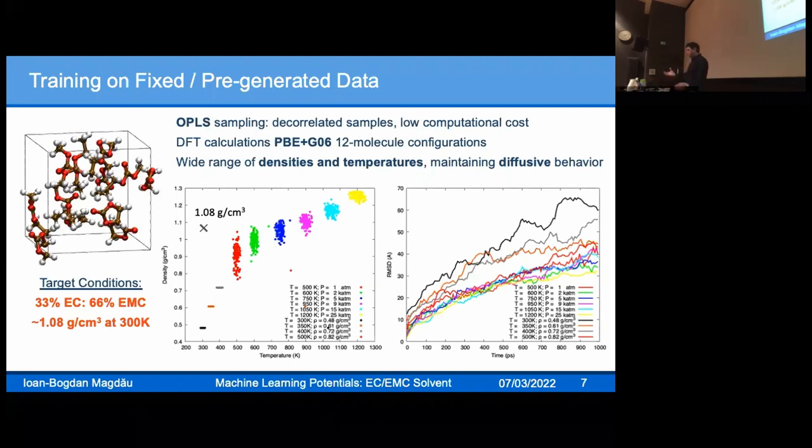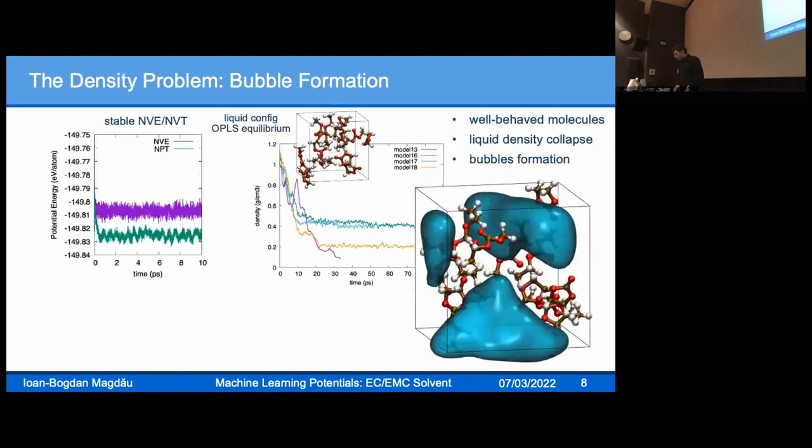We go to much higher temperatures than what we eventually want to describe, up to 1200 Kelvin, and we expect everything we predict is in an interpolating regime. We get good RMSE errors for energies, forces, virials. I tried a swath of different models, 20 or so GAP models. Everything looks well with RMSEs.